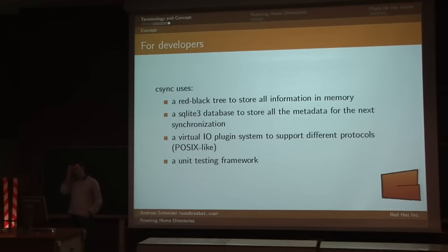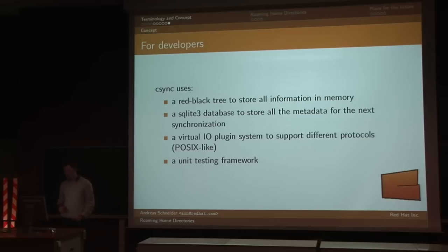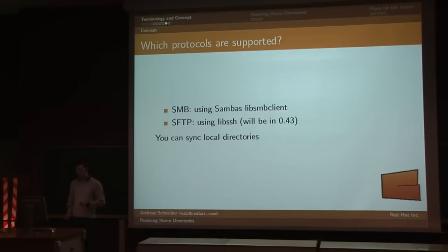For developers interested in how this is done: Csync uses a red-black tree to store all information in memory, so it is really fast, especially on update detection. Reconciliation is completely done on the red-black tree and is really fast — if you have a lot of files it can finish in less than one second normally. An SQL database is used to store all the metadata needed for synchronization. It has a virtual I/O plug-in system to support all the protocols, currently SMB and SFTP.